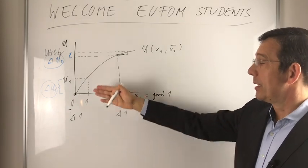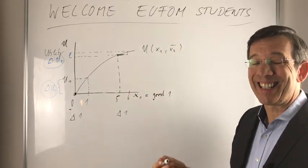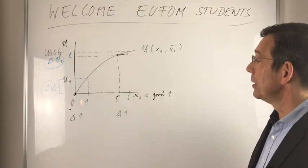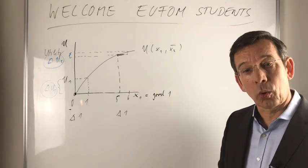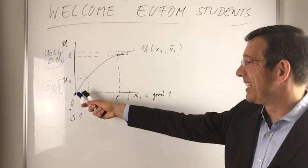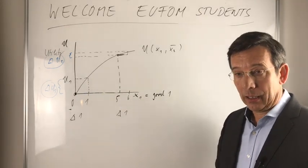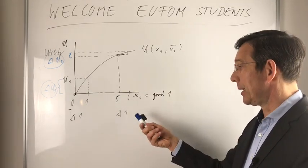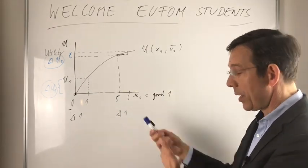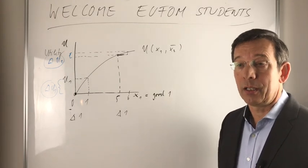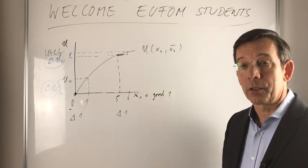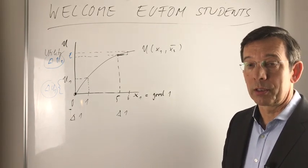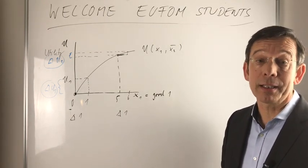Or in other words, the marginal utility is decreasing in a standard utility function. And that's the core message. The core message is that it depends on the level of goods you already consume, whether the additional unit of goods consumed has a larger or a smaller utility increase. That's the core idea.